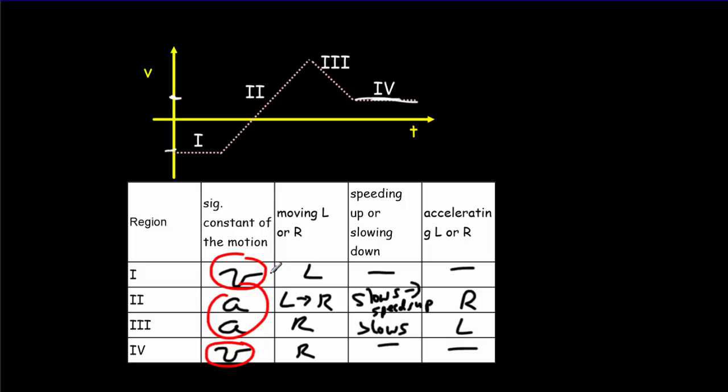Now, moving left or moving right, this time it's not the slope. You've got to look whether or not the points are above or below the axis. So, these points in region 1 are below the axis, so it's left. Region 2 starts out to the left, but moves to the right. Region 3, those points are all to the right, and these points in region 4 are all to the right as well.